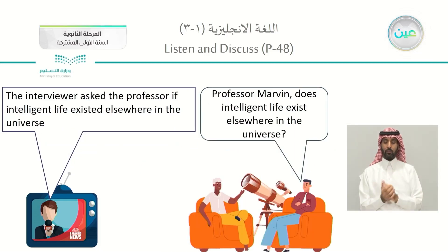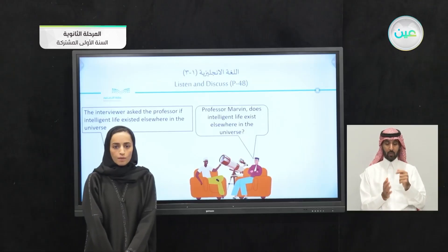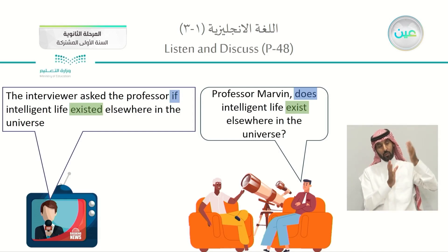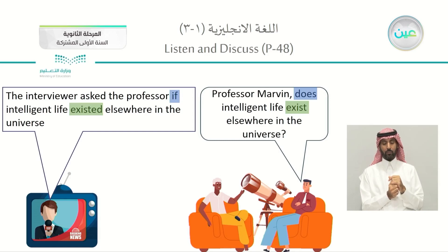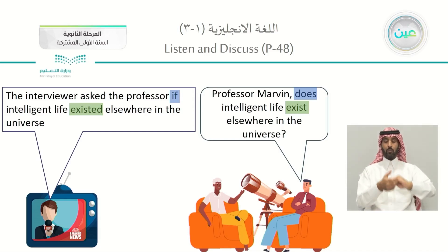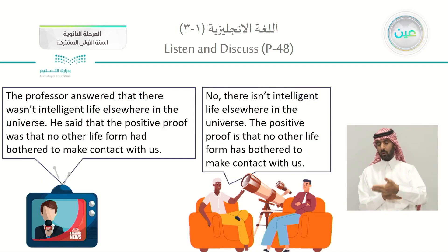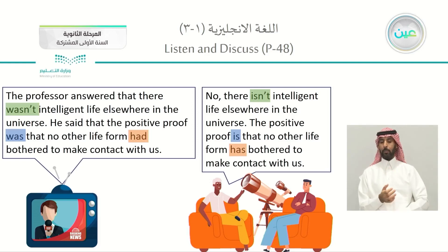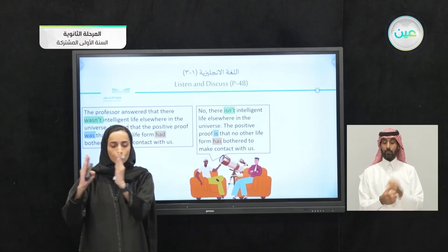For the conversation with Professor Marvin: 'Does intelligent life exist elsewhere in the universe?' — this time we're having a question. A question will be reported using 'if.' We change 'does' into 'if,' and 'exist' becomes 'existed.' His answer 'there isn't intelligent life' — 'is' changes to 'was.' Then 'the positive proof is' becomes 'the positive proof was,' and 'no one has bothered' becomes 'no one had bothered.' All tenses go one tense backward.